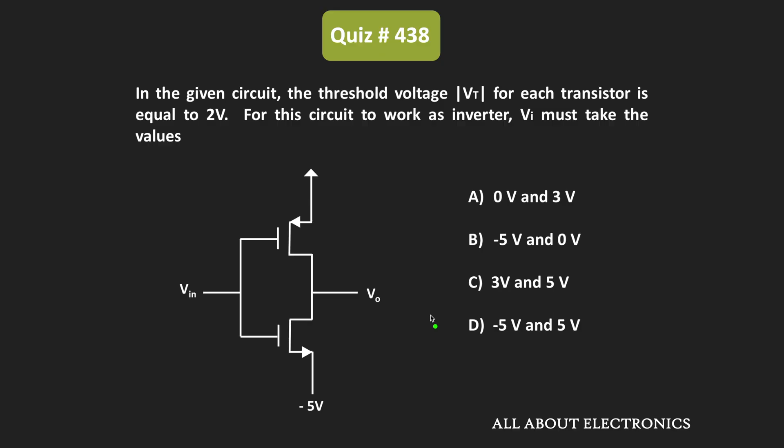Hey friends, welcome to the YouTube channel All About Electronics. In this question, we have been given a circuit and we have been given that the threshold voltage for each MOSFET in the circuit is equal to 2V. For this circuit to work as an inverter, we have been asked to find what should be the value of the input voltage.